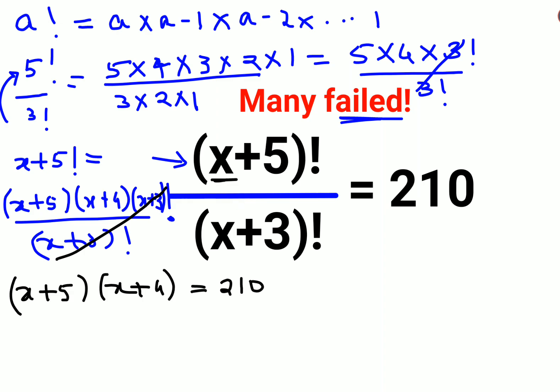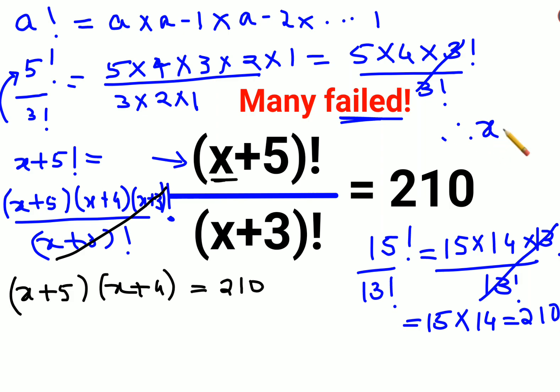So we have 10 plus 5, that gets you 15. We have 15 factorial divided by 10 plus 3, that gets you 13 factorial. Let's do the expansion: 15 into 14 into 13 factorial, divided by 13 factorial. This and this gets cancelled. We are left with 15 into 14, which gets you 210. Therefore, the value of x is 10 for this particular question.